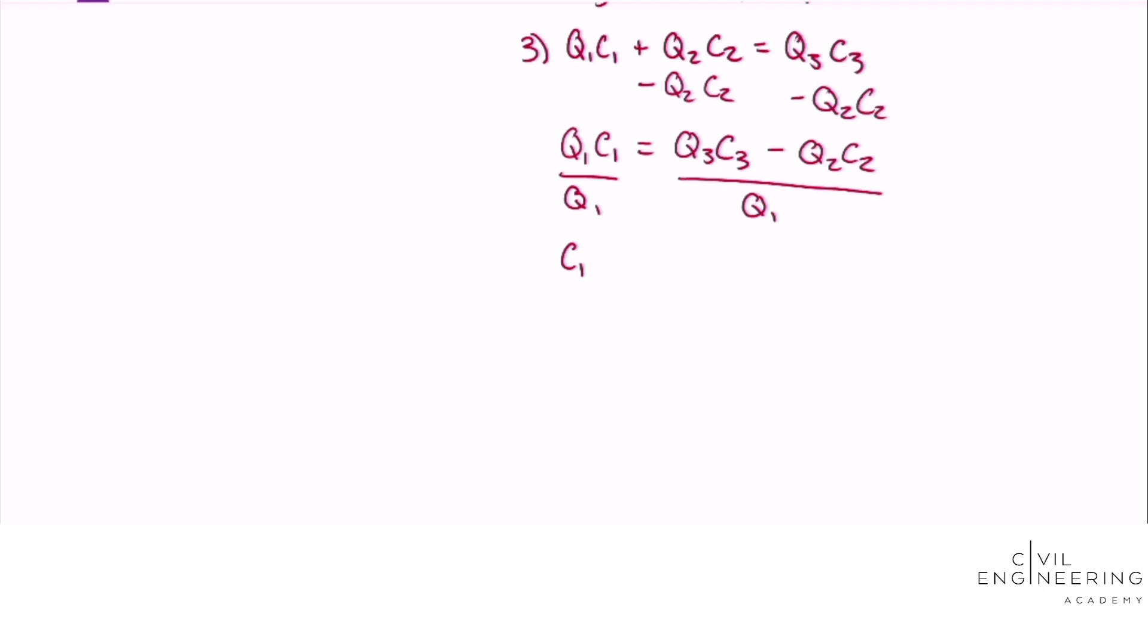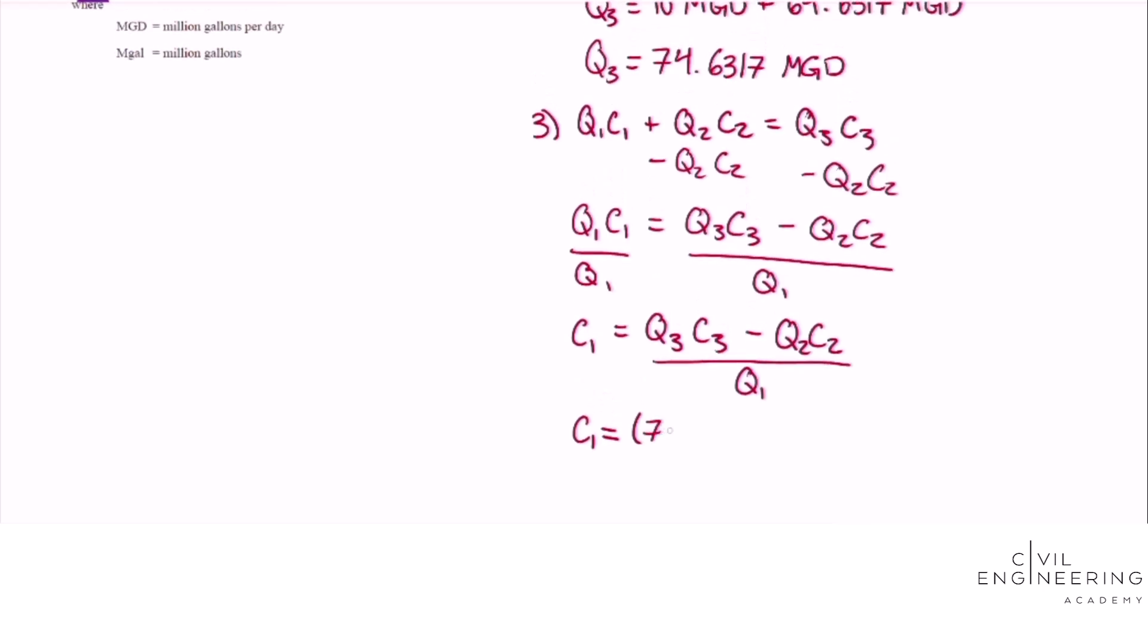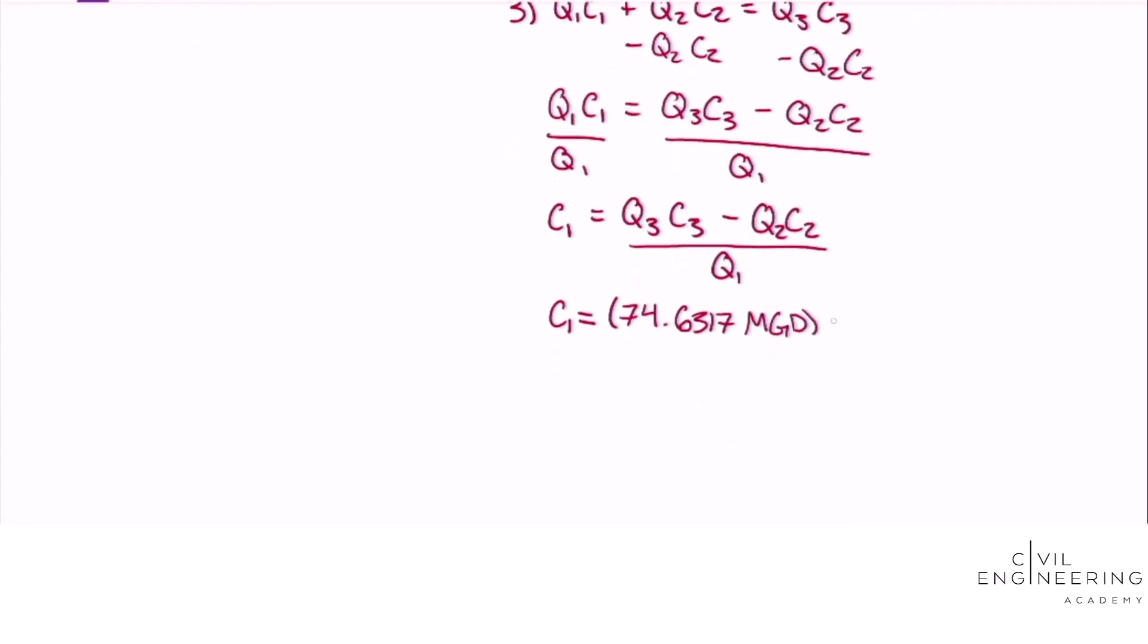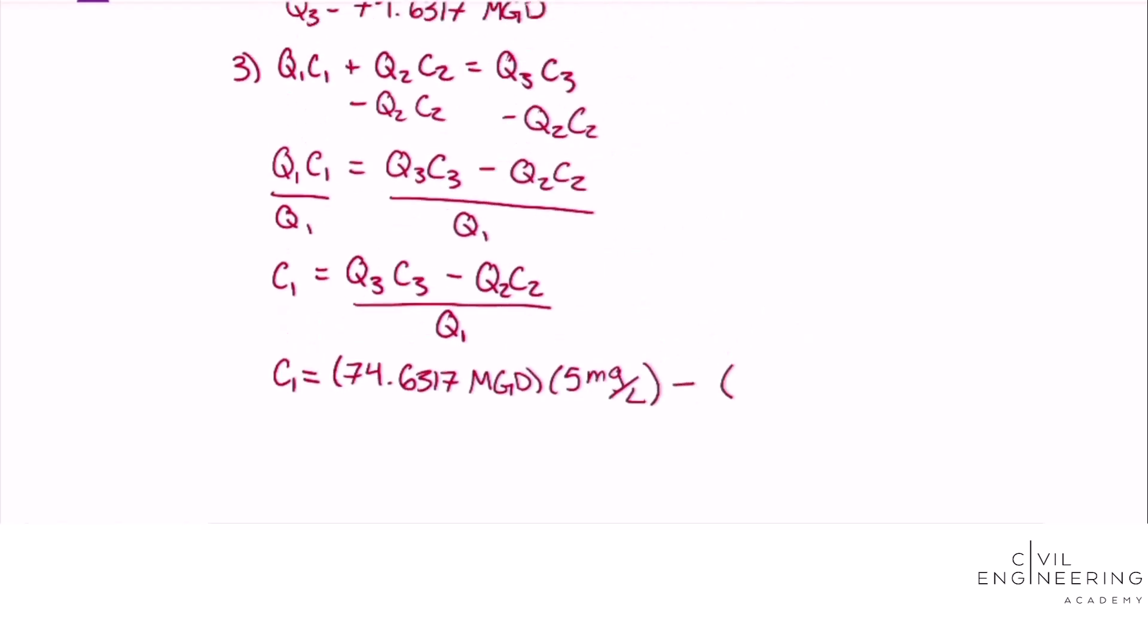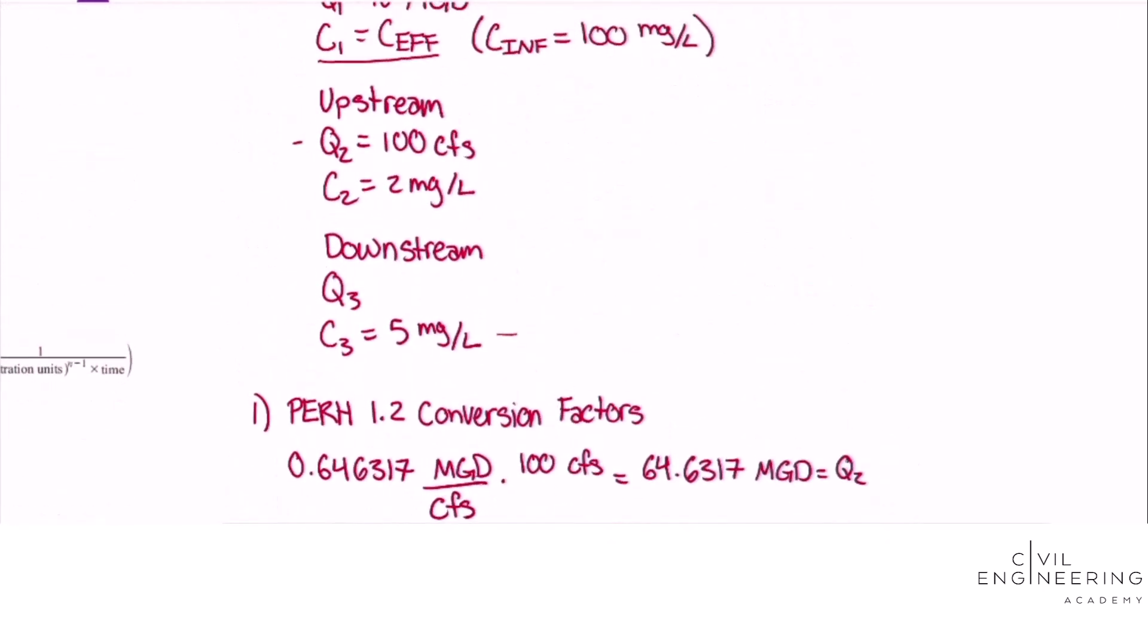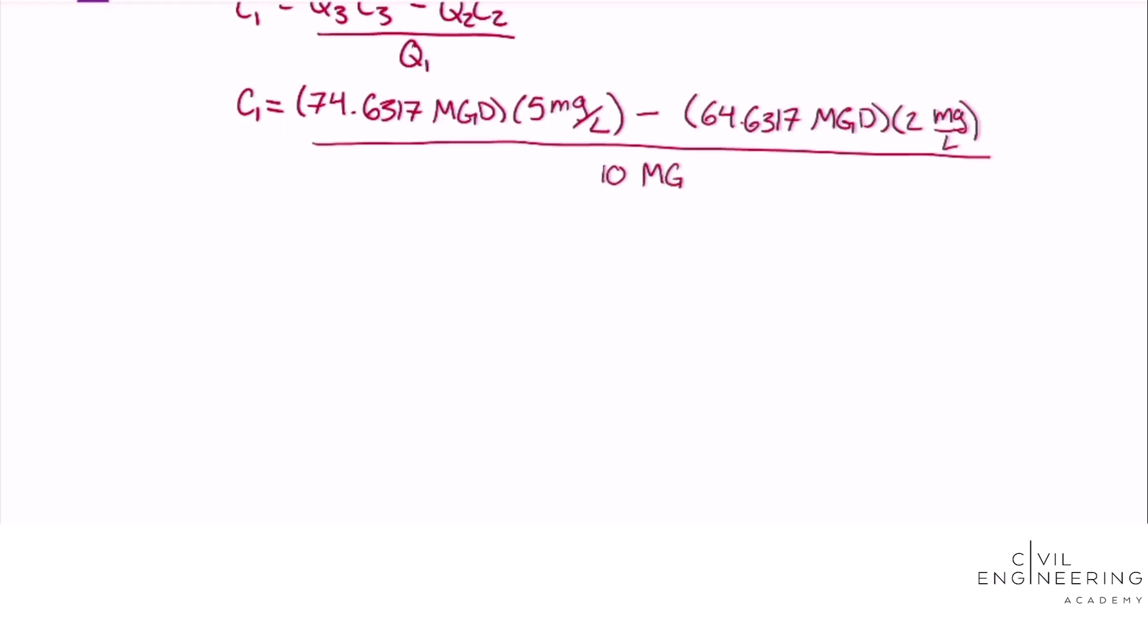We'll just plug all of our values in now that they're all in the same units. That's 74.6317 times this 5 mg per liter, our goal BOD5 concentration, minus Q2 which was our 64.6317, and Q2 had the concentration of 2 mg per liter, all over Q1 which was our 10 mgd. You can just plug that into the calculator straight because the mgds will cancel out on the top and bottom.